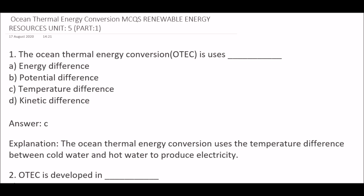Your renewable energy resources Unit 5 is divided into two parts. The first part is ocean thermal energy conversion. So let's start.